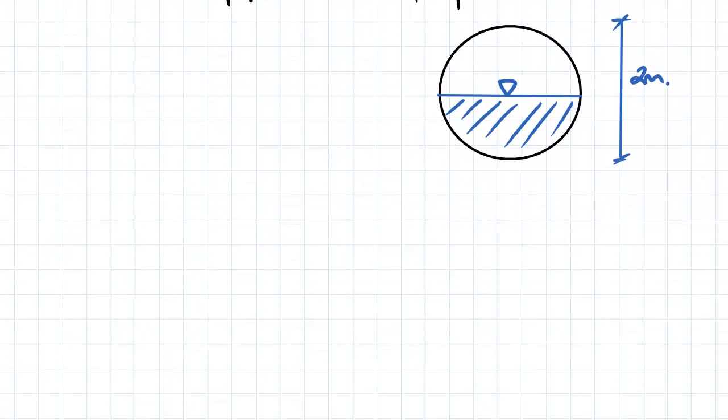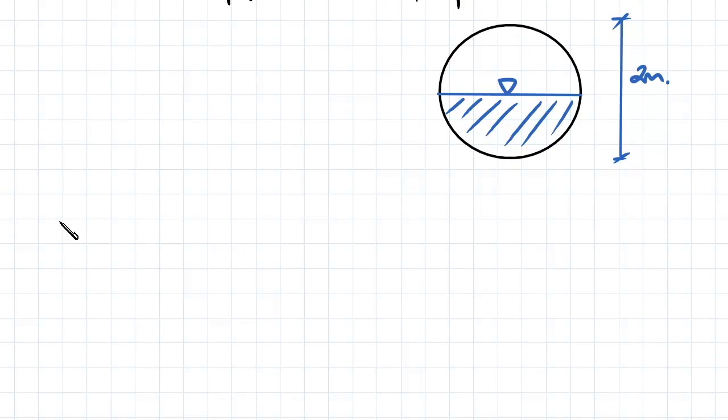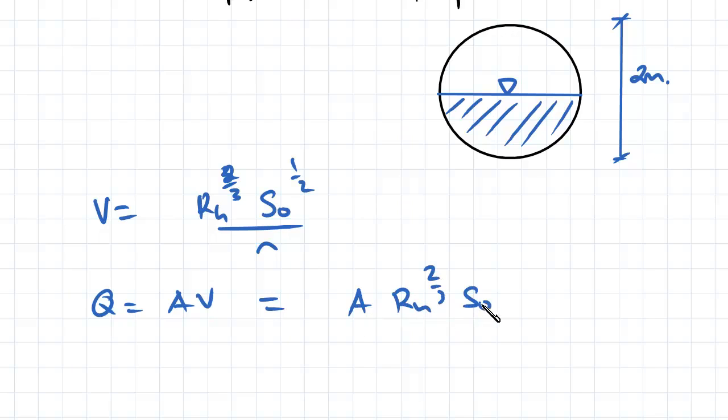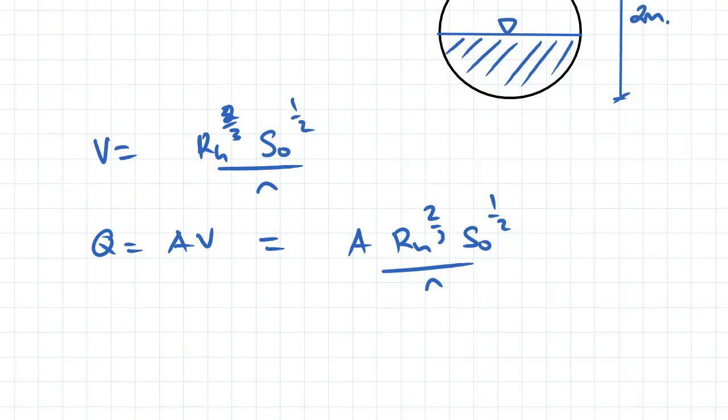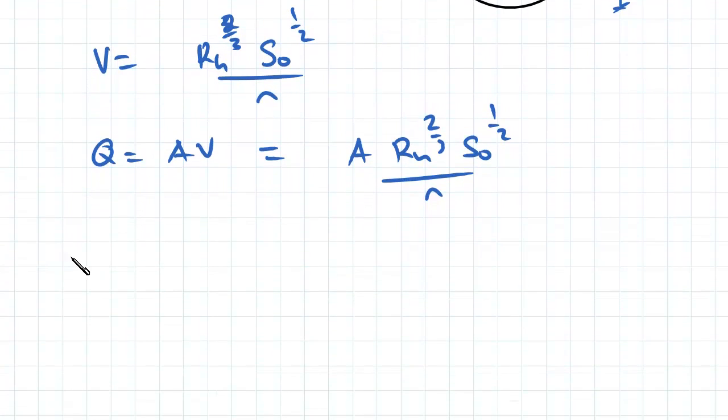What we're going to be using is our main equation. We know from the last video that the Manning equation for velocity is equal to the hydraulic radius to the power of two-thirds multiplied by our slope to the power of a half, divided by our resistance coefficient. Clearly the flow rate Q is just going to be equal to the area times the velocity, so that's the area times our hydraulic radius to the power of two-thirds times our slope to the power of a half divided by our Manning coefficient.